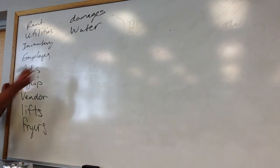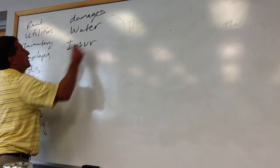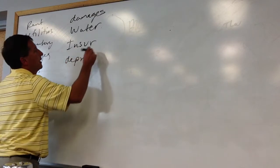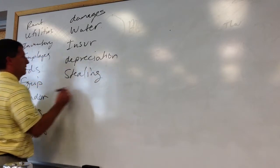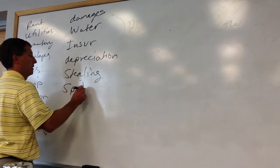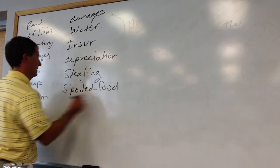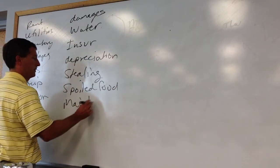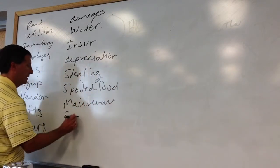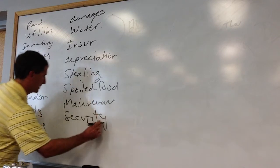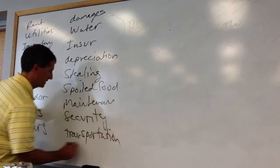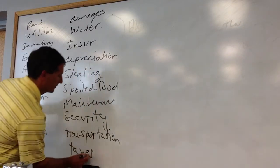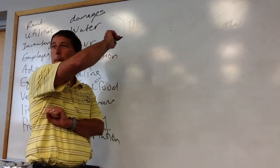What? Insurance. Insurance. Good. Depreciation. Depreciation. Whenever people steal stuff. Stealing. Loss. Leakage. Food that spoils. Spoiled food. Maintenance. Maintenance. Security. Security. Transportation. Transportation. Taxes. Taxes. What else? Licenses. Licenses. Good.